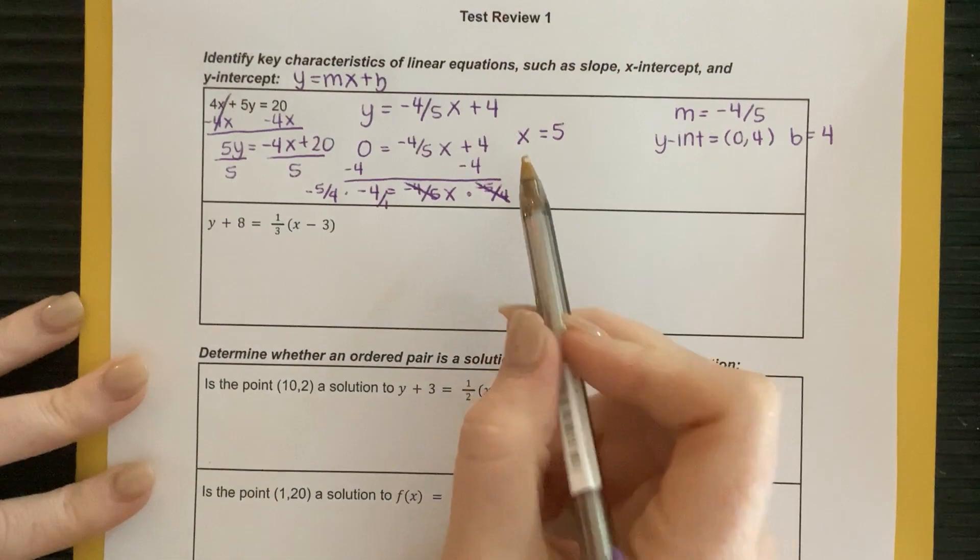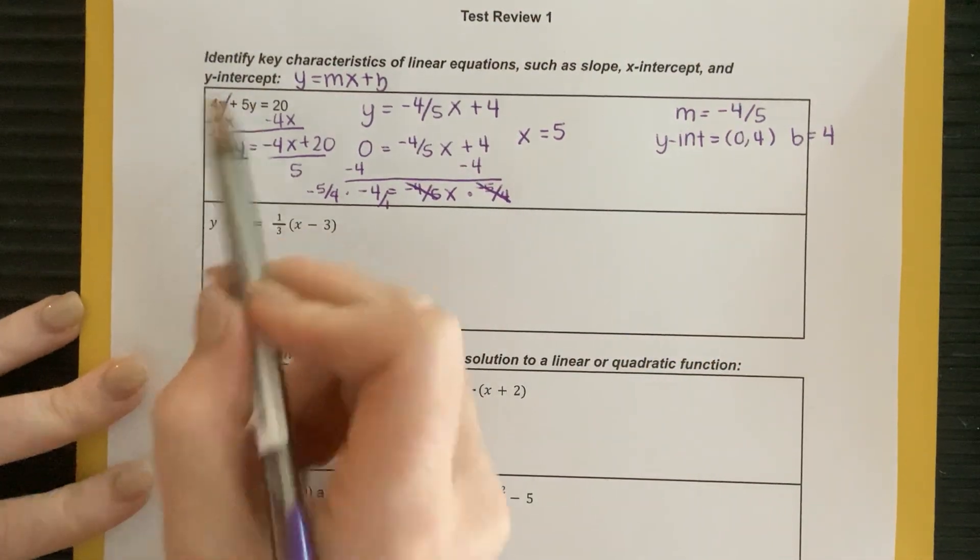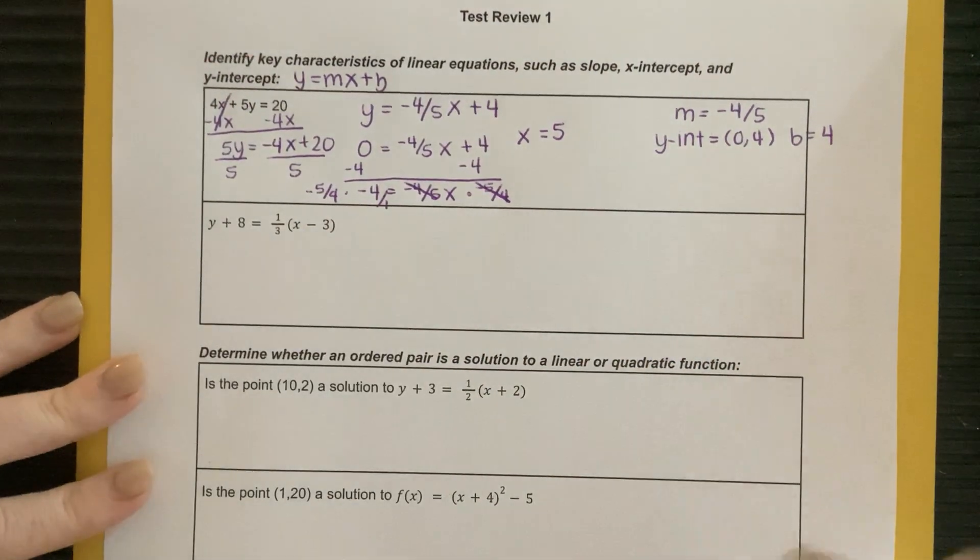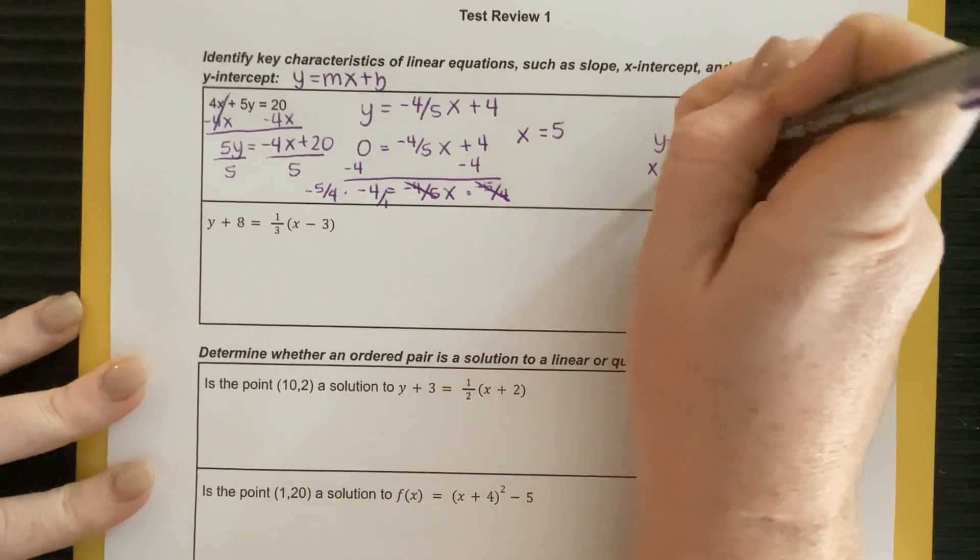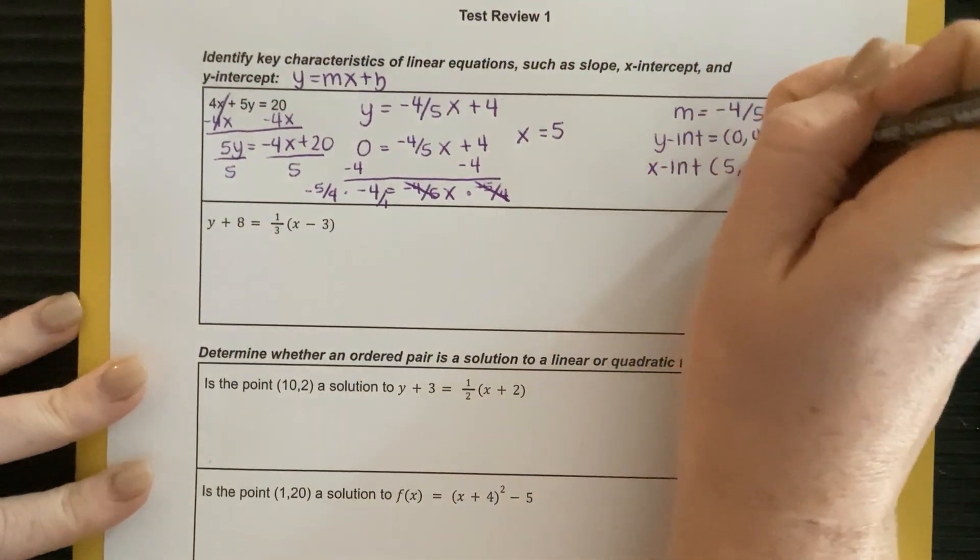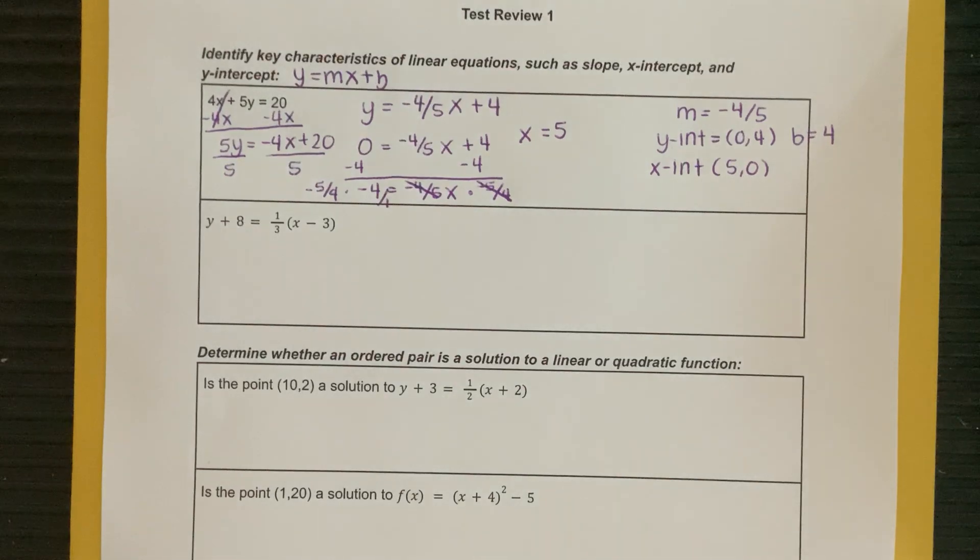All right? If you plugged in 0 for this equation for your y, you would still get the same answer. So it does not matter. So your x-intercept would be the 5 comma 0. Okay? So that kind of shows you how to do this one.